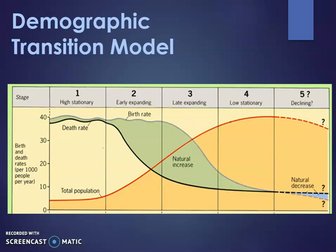On this diagram we have population growth shown by the red line, birth rates shown by the gray line, and death rates shown by the black line. The green shaded area is your natural increase rate. Depending on what stage of the DTM you're in, birth rates and death rates will be high, decreasing, or very low, affecting whether population increases or declines in stage five.